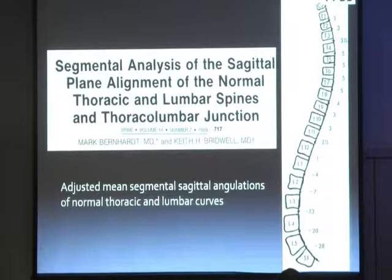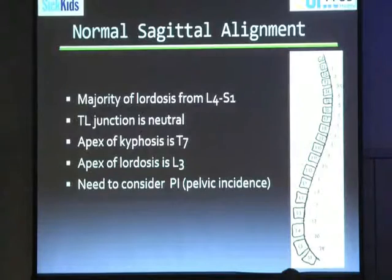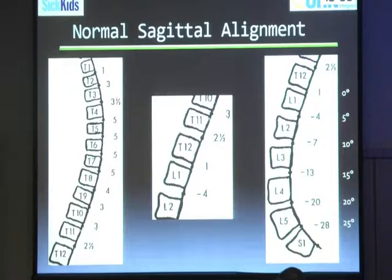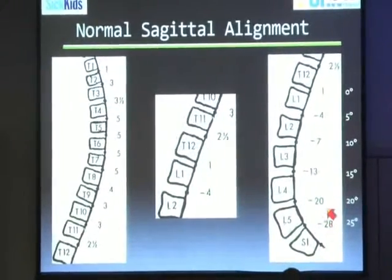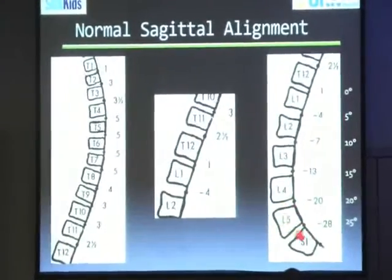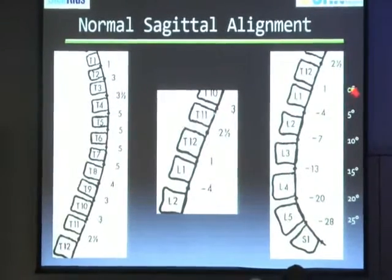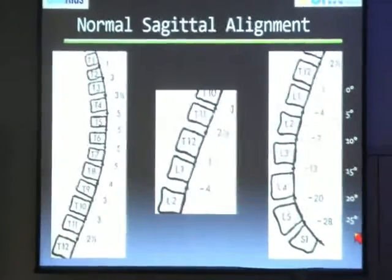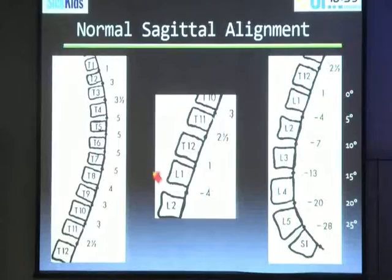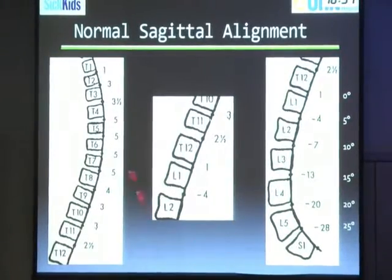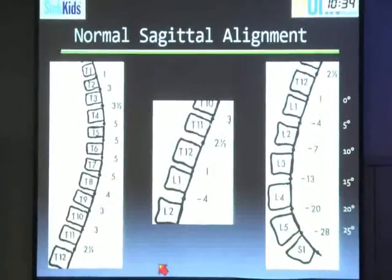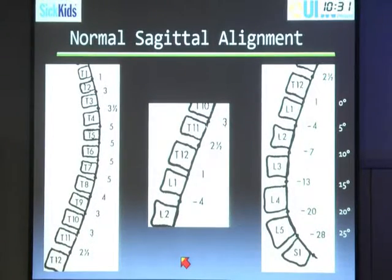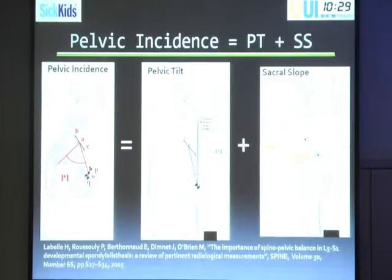You can see the rough distribution of sagittal alignment that you want to have. Most of the lordosis is going to be between L4 and S1. The majority of our lordosis is between L5 and S1 — roughly at L2-L1 we're neutral, and we go up by about 5 degrees each level to about 25 degrees for L5-S1. We have a very neutral thoracolumbar junction and a gradual increase in kyphosis, with most of the apex in our thoracic spine. Knowing this, you'll know how to bend your rod appropriately and what your goals are.